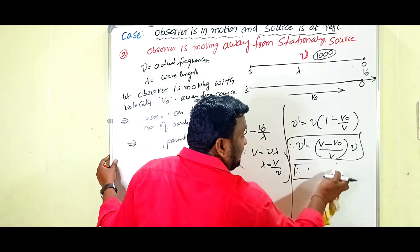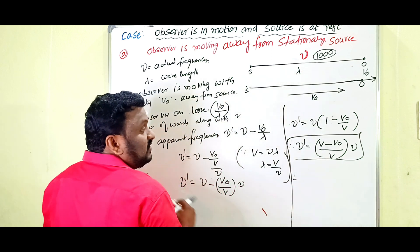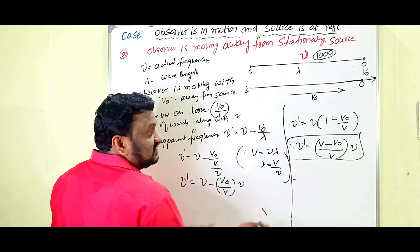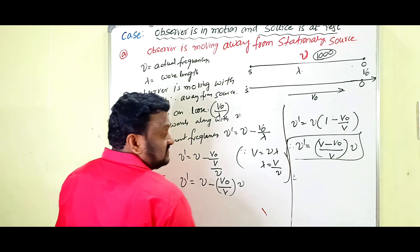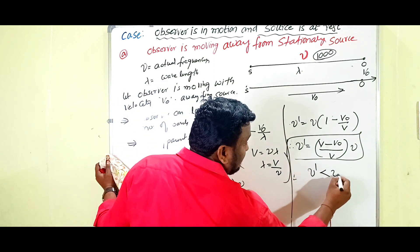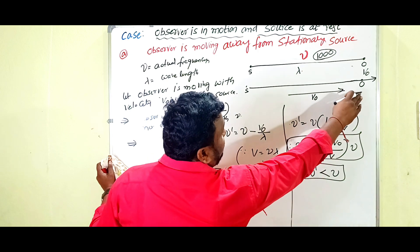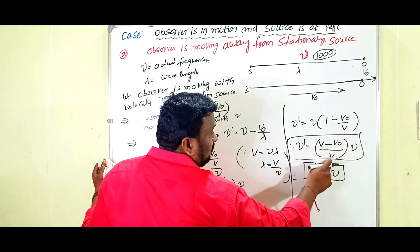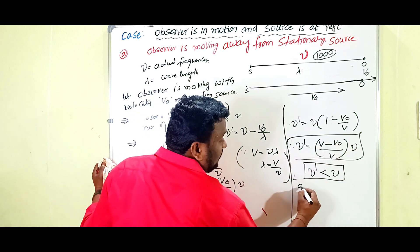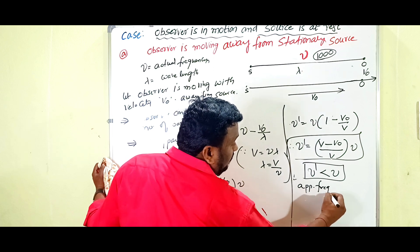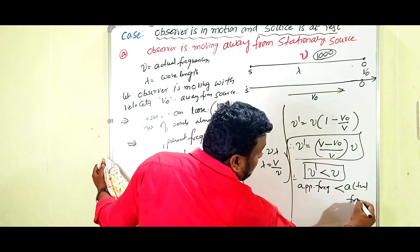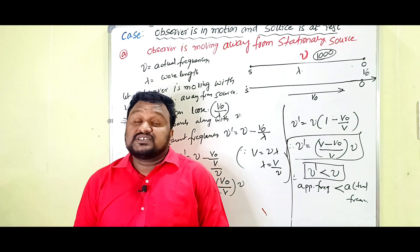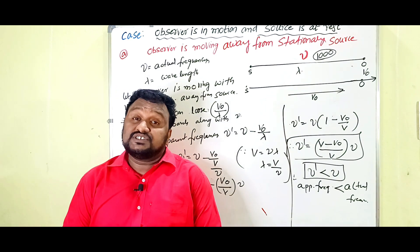In this case, ν' is less than ν. When the observer is moving away from the source, the apparent frequency equation is ν' = [(v − v₀)/v] × ν, and the apparent frequency is less than the actual frequency. This completes the derivation of apparent frequency when the source is at rest and observer is in motion.